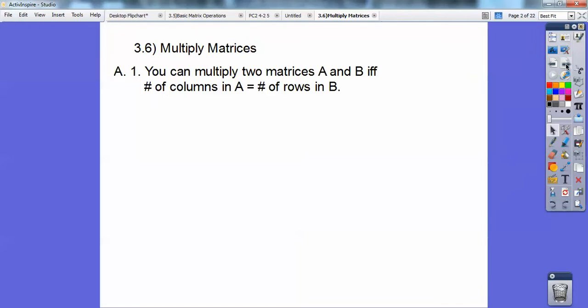All right, you can multiply two matrices A and B, and this IFF means if and only if the number of columns—the columns are the ones that go up and down, think of a coliseum, the columns that hold up the coliseums—if the number of columns in A equals the number of rows, rows go sideways like this, in B.